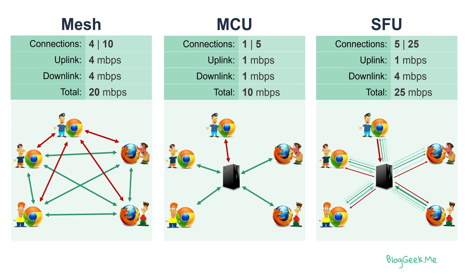In each of these architectures we can apply optimizations that will decrease the uplink and downlink and change the number of connections somewhat, but in general this is how these architectures look. Today the most common approach is the SFU for group calling, and an MCU if what we're trying to do is record data. The MCU was very common before WebRTC but it is just too expensive to run at large scale.